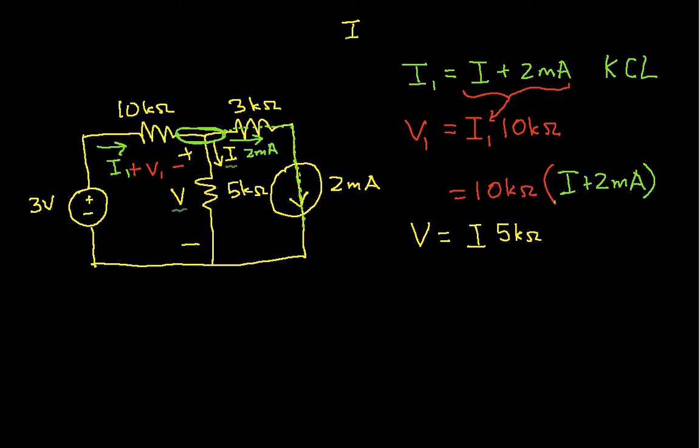And what I can do now is apply Kirchhoff's voltage law around this loop that includes the 10k ohm resistor, this 5k ohm resistor, and our 3 volt source. And if I do that, I have V1, that's the voltage across the 10k ohm resistor, I'm going from positive to negative, plus V, which is the voltage across the 5k ohm resistor, minus 3 volts. I have a negative sign here because I'm going from negative to plus on the 3 volt source, is equal to 0.